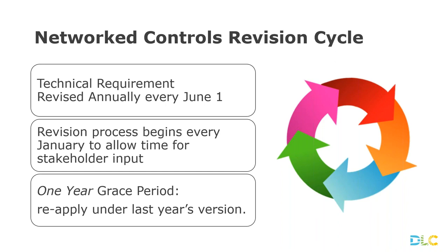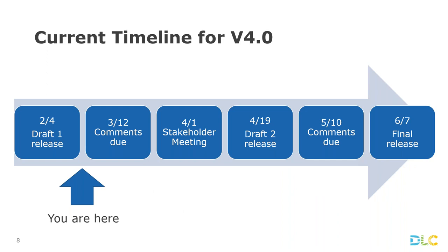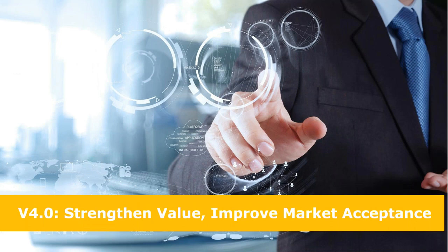Before needing to upgrade or dropping off the list in the following June. We sent out the first draft of version 4.0 in early February and comments are due by March 12th — about three more weeks. At the stakeholders meeting in early April, which you are all invited to attend, we'll be exploring the comments received and refining the ideas that will go into a second draft coming later in April. After that, we'll take more comments in May and then release the final requirements for version 4.0 in early June.